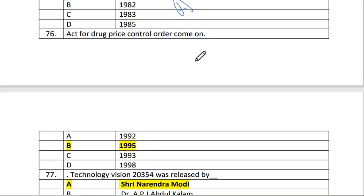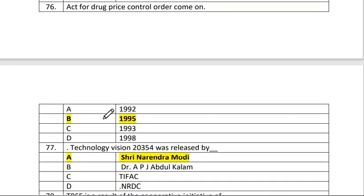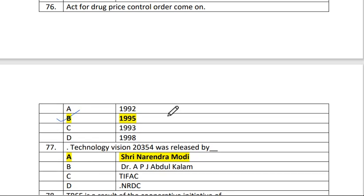Next is question number 76. Act for the drug price control order came in 1995. The answer is B.